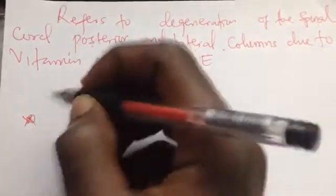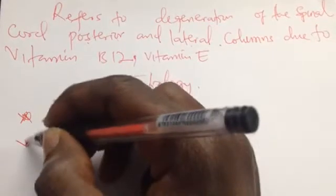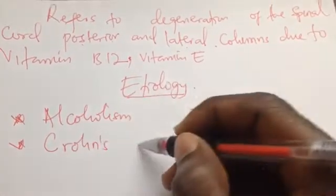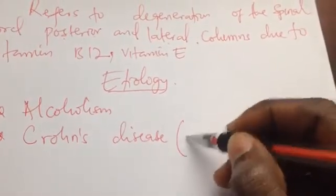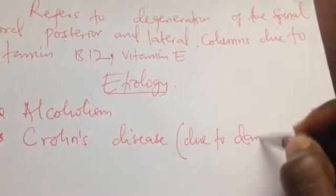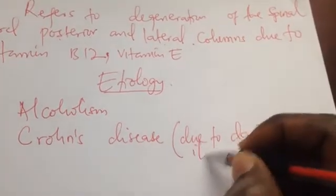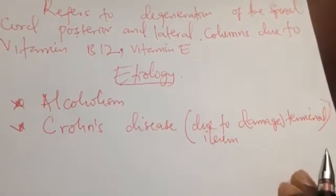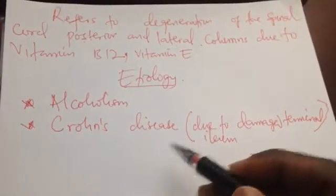The causes of Vitamin B12 deficiency in the body include alcoholism. Another factor is Crohn's disease, because someone suffering from Crohn's disease has a damaged terminal ileum. Due to inflammation of the terminal ileum, Vitamin B12 cannot be absorbed, since the terminal ileum is the site of Vitamin B12 absorption.